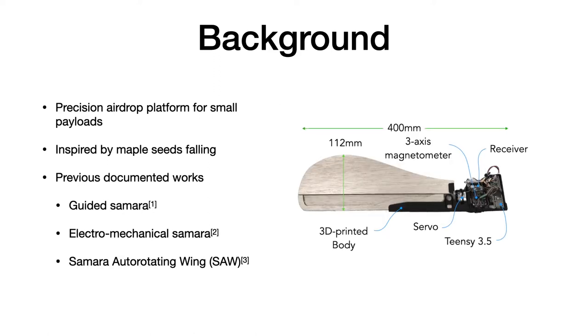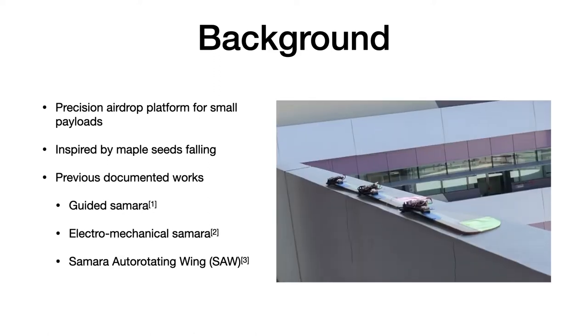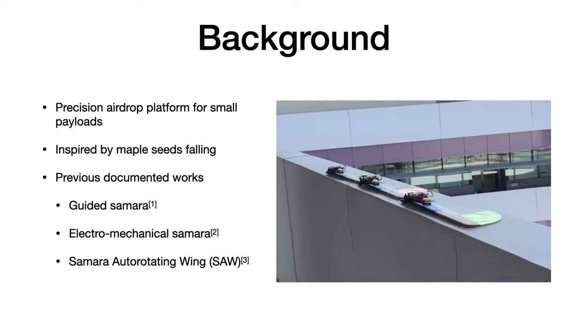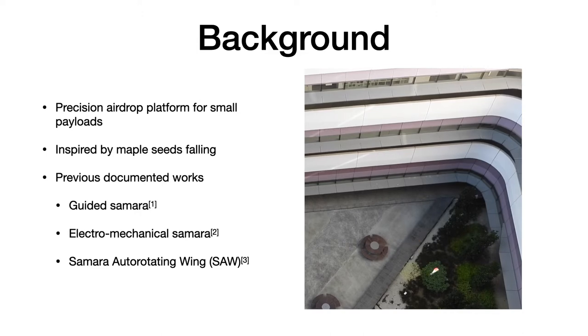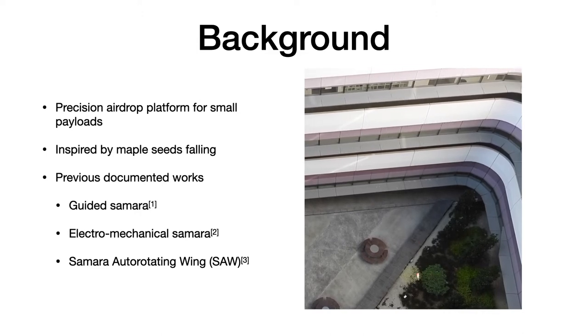Lastly, it is our previous work on Samara autorotating wing. The prototype featured a large flap which it uses for direction control. So far this was the only documented effort that achieved direction control on an actuating single wing platform.